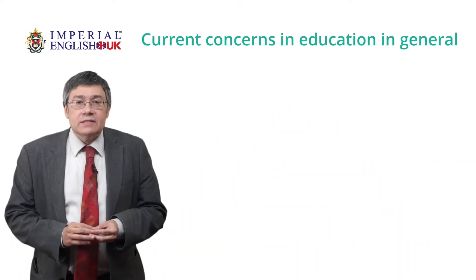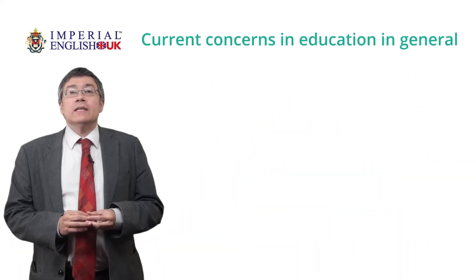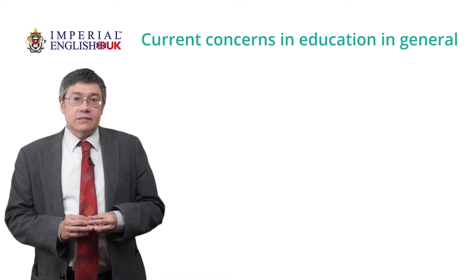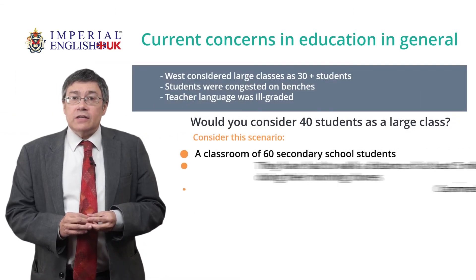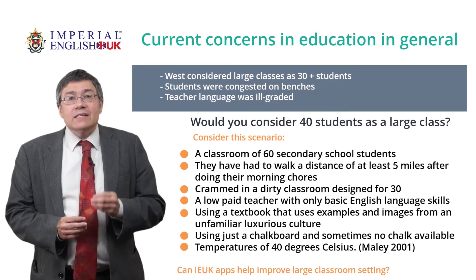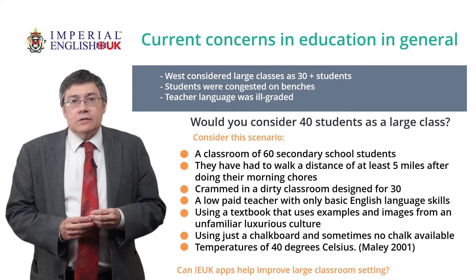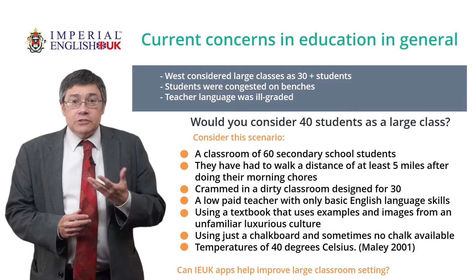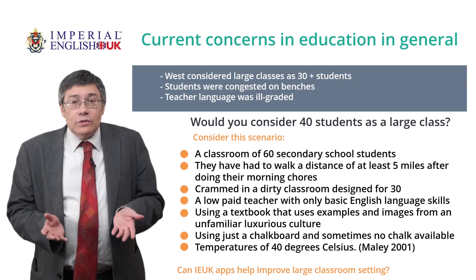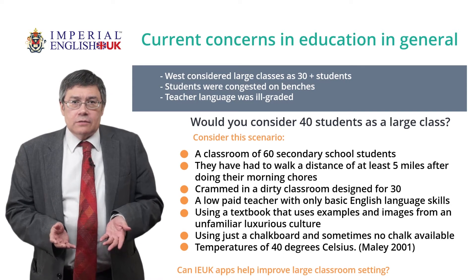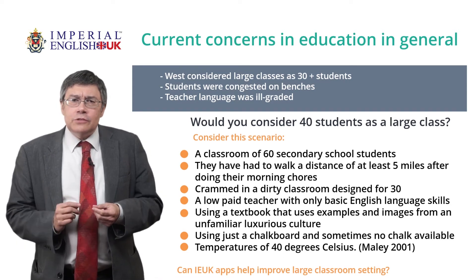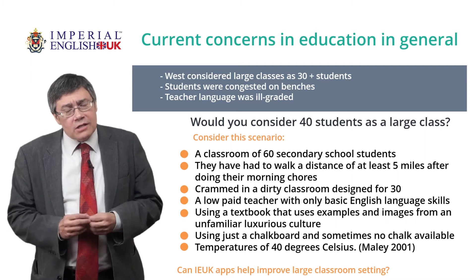It was West in 1960 who first explored the effect of learning in large classes. He observed classes of 30 students, more often 40 or 50, sitting congested on benches. The teachers graded their language poorly and often did not have adequate linguistic skills. Would you agree that more than 40 students is a large class?